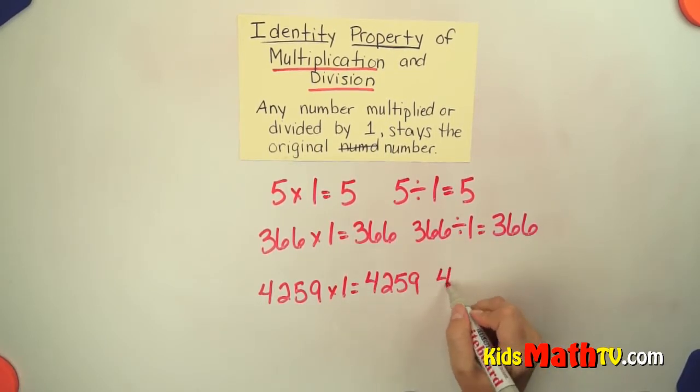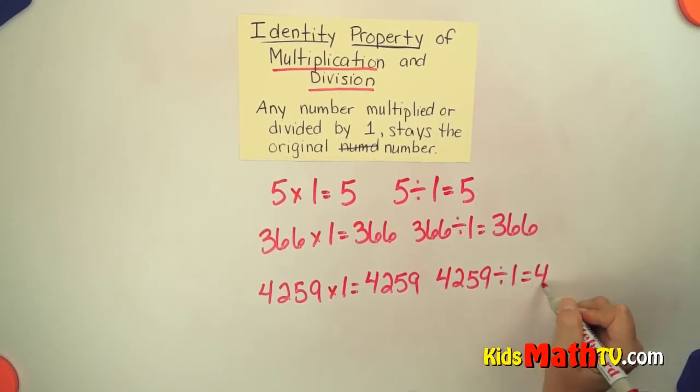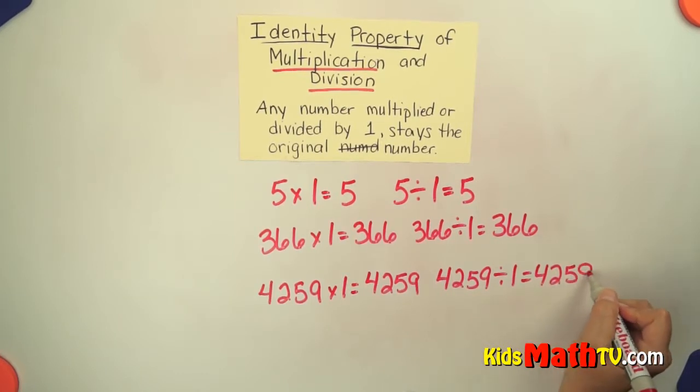Same with division. 4,259 divided by one equals 4,259.